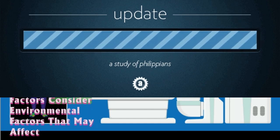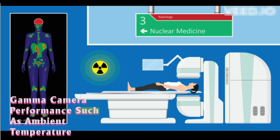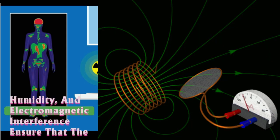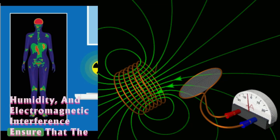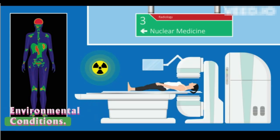Environmental factors: Consider environmental factors that may affect gamma camera performance, such as ambient temperature, humidity, and electromagnetic interference. Ensure that the gamma camera is operating within the recommended environmental conditions.